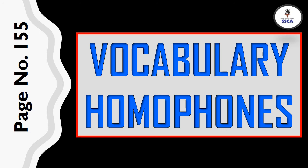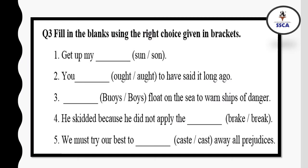Here we have our third topic, which is vocabulary. We have studied synonyms, antonyms, and homophones in vocabulary. Here, you will have to solve the exercise about homophones only. Open page number 155 and study about homophones. After that, you will solve exercise number 3, which is fill in the blanks using the right choice given in the brackets. You have five blanks and for each blank you have two homophones — you will have to pick the right one.